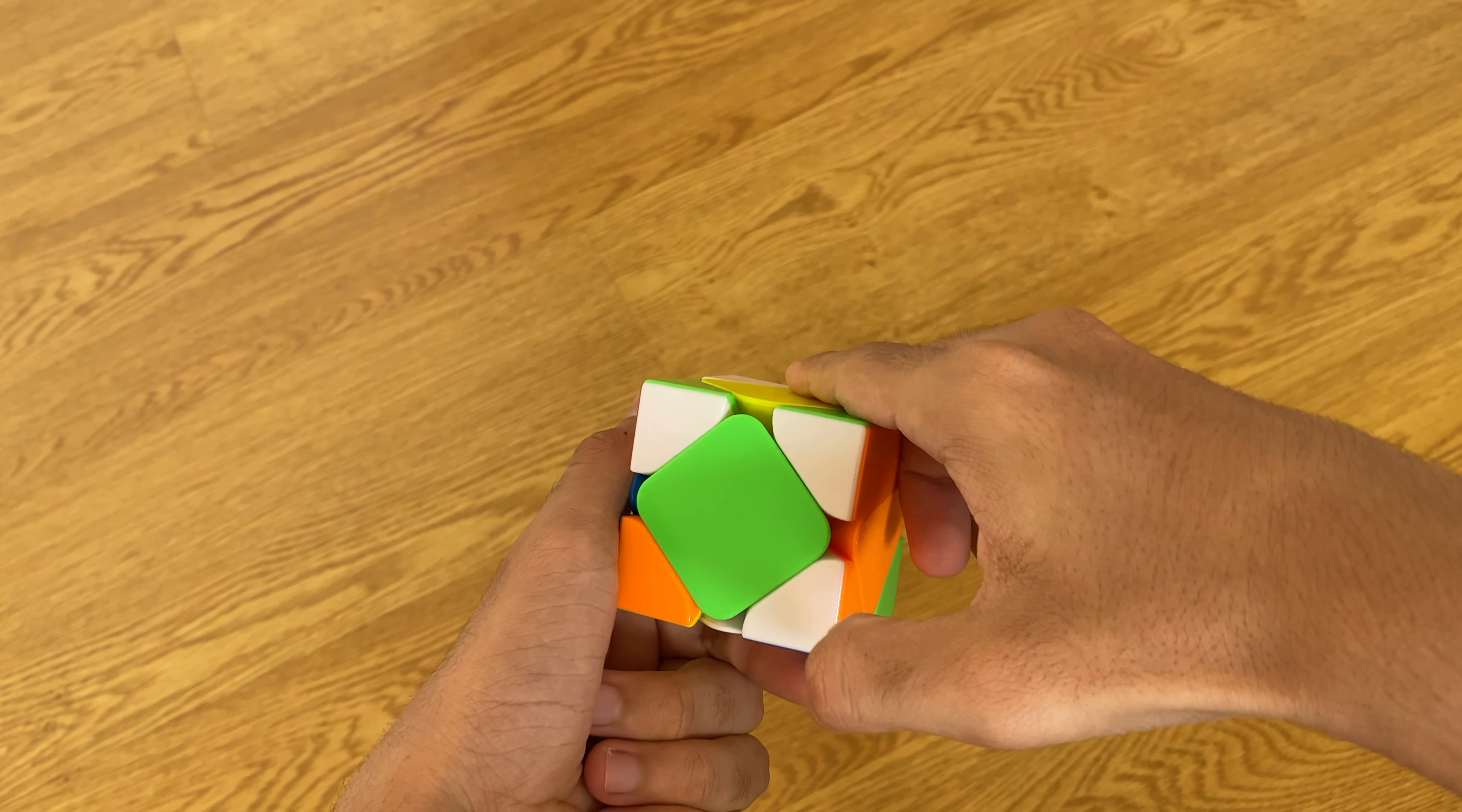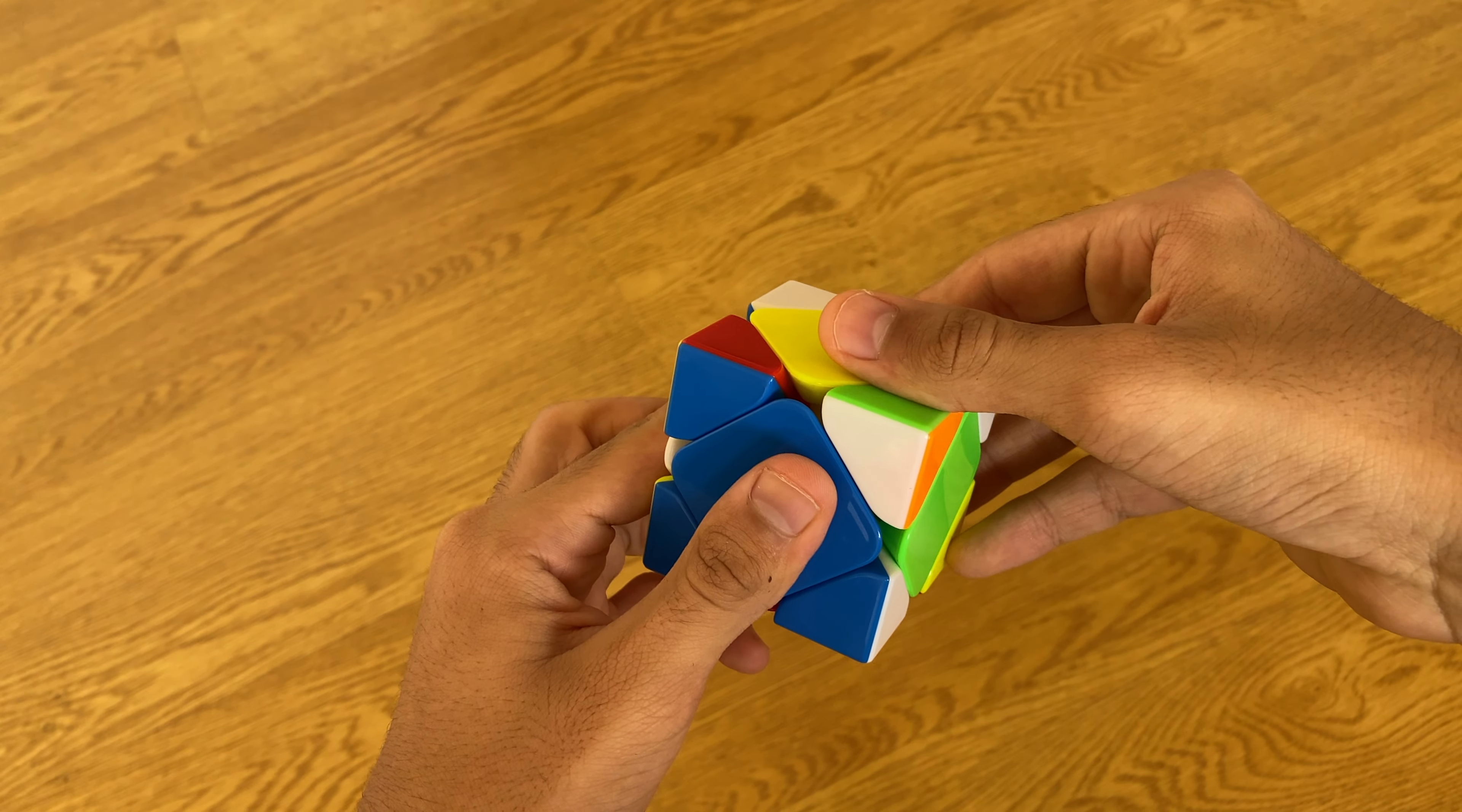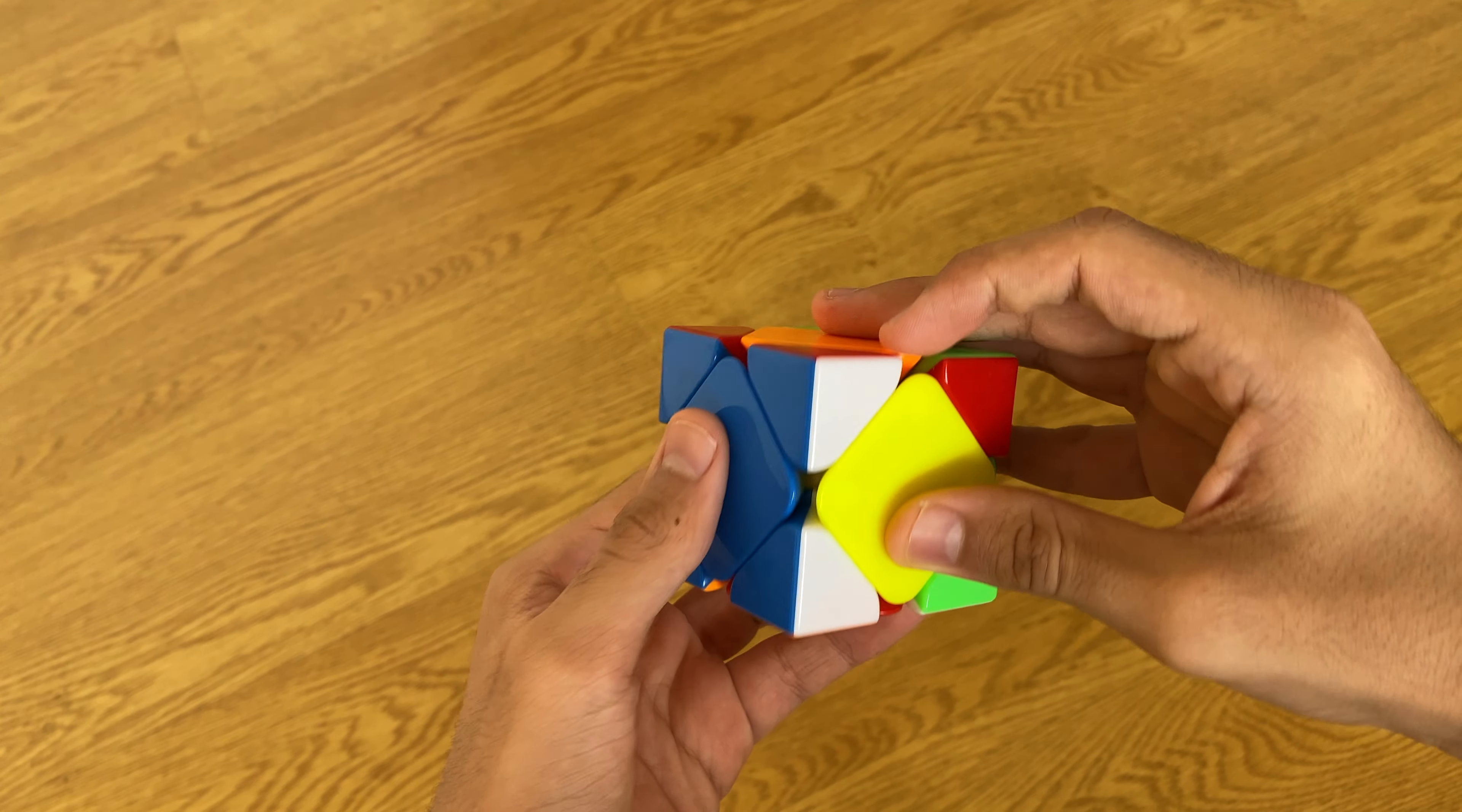push this down, move this blue corner out of the way, push this up, bring the blue corner back, then bring the other blue corner back, and that is a sledgehammer.